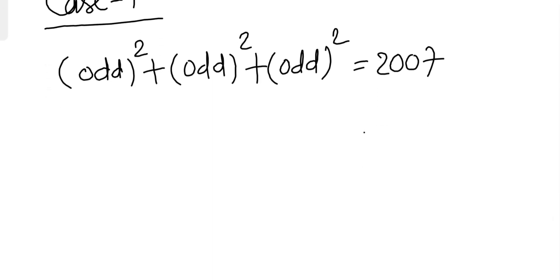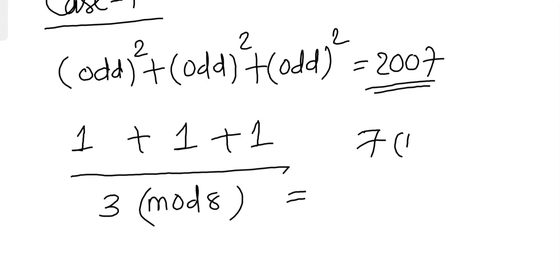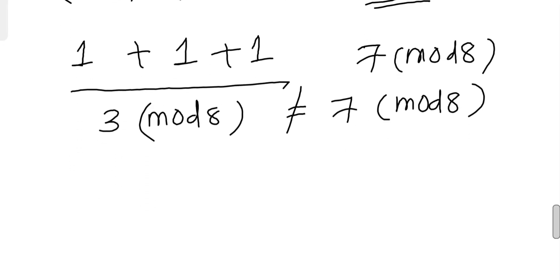So as I said, taking both sides mod 8, because these are odd, remainder will be 1. Because this is also odd, remainder will be 1. And here also remainder will be odd, and this side is 3 mod 8, whereas 2007 is 7 mod 8. And clearly this is not equal. So no solution exists in odd numbers. No solution exists in case 1.